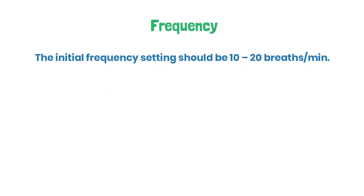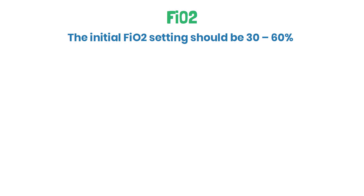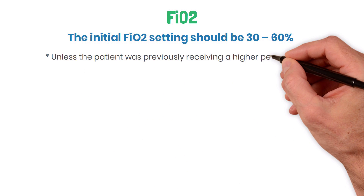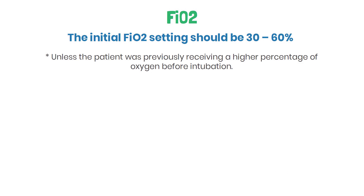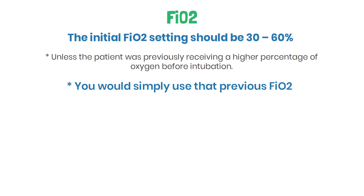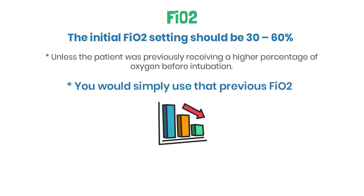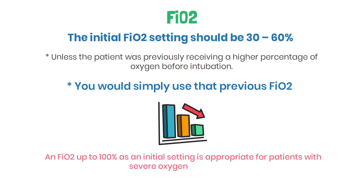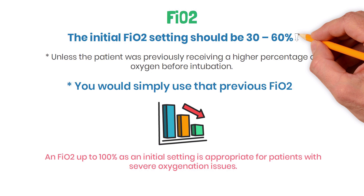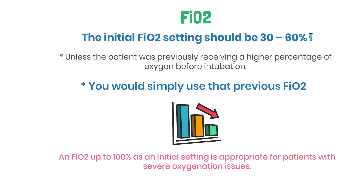The initial frequency setting should be between 10 to 20 breaths per minute. The initial FiO2 setting should be 30 to 60%, unless the patient was previously receiving a higher percentage of oxygen before intubation — in that case, use the previous FiO2. In general, strive to provide the lowest concentration of oxygen possible to maintain a normal PaO2. An FiO2 up to 100% as an initial setting is appropriate for patients with severe oxygenation issues, but titrate and wean them below 60% as soon as possible.